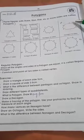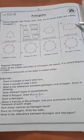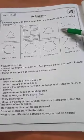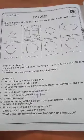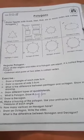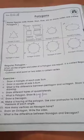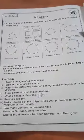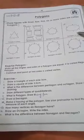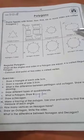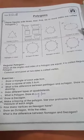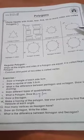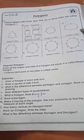Count the corners of the hexagon: one, two, three, four, five, six. Six corners means six vertices. The answer is: a hexagon has six vertices. We will write the answer and draw the figure on the blank page.